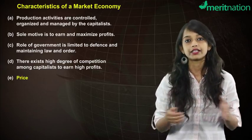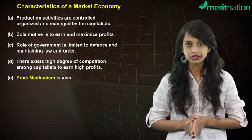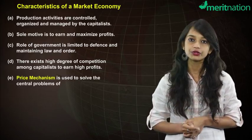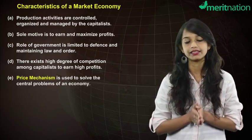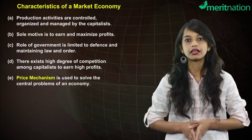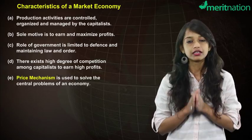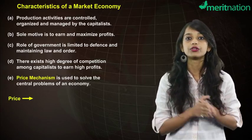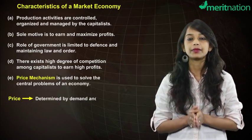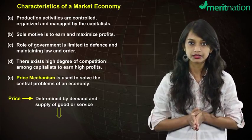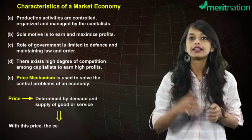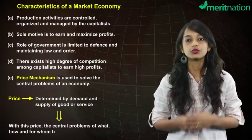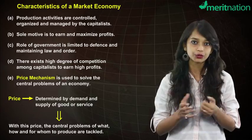And fifth, in a market economy, the central problems — that is, what to produce, how to produce and for whom to produce — are solved by the price mechanism. In a market economy, the price for a good or a service is determined by the demand and supply forces. And based on this price, the capitalists take decisions relating to what to produce, how to produce and for whom to produce.